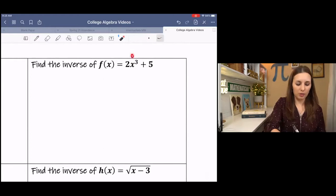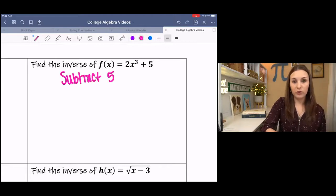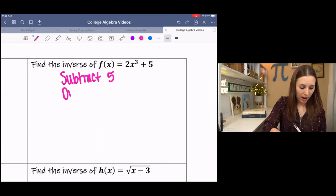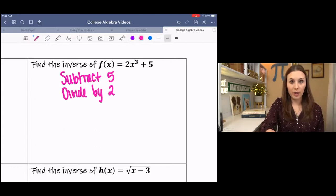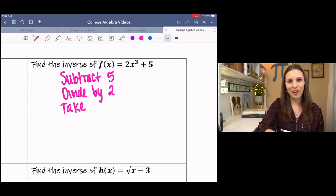So we're kind of pretending like X is Y, and we're solving for Y. To do that, we would have to subtract five, divide by two, and then to undo the third root, we would have to take the third root.